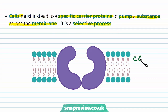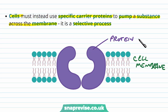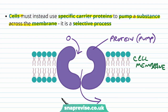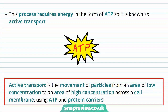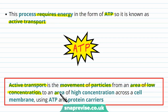It's a very selective, energetic process. If this were the cell membrane, there are particular proteins found in the membrane which are carriers or pumps, and they take molecules, change their shape, and send them to the other side against the concentration gradient. Because this process cannot happen naturally, it requires energy in the form of ATP, and so we call it active transport. Active is the opposite of passive. Active transport is the movement of particles from an area of low concentration to an area of high concentration across a cell membrane using ATP and protein carriers.